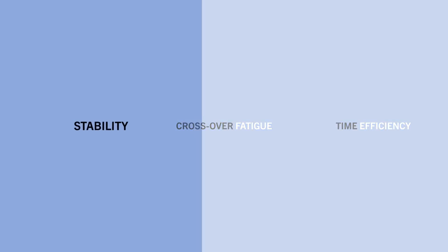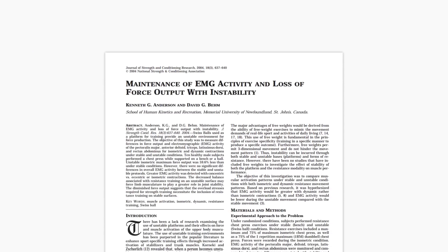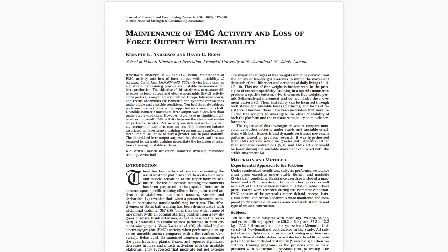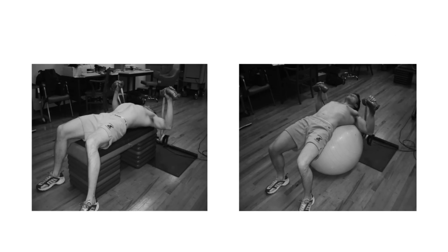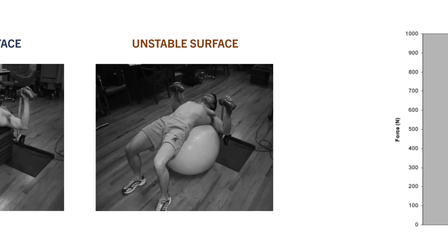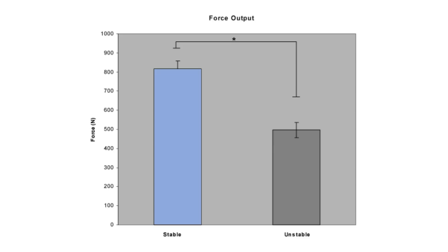The first is the issue of stability. For some exercises muscles tend to produce less force in unstable compared with stable positions. For example this study explored the influence of external stability on force output during resistance training. Subjects performed maximal isometric chest press movements at 90 degrees of elbow flexion while lying on a stable bench and an unstable swiss ball.